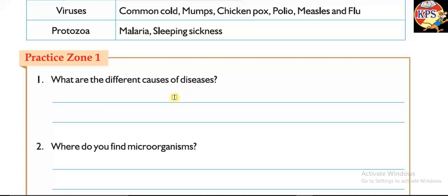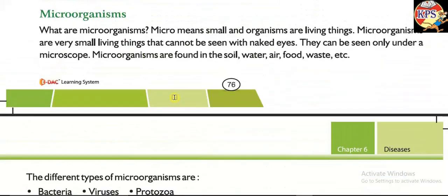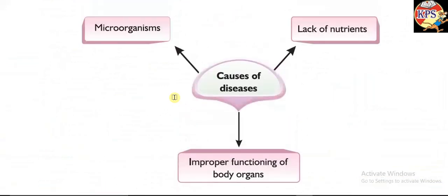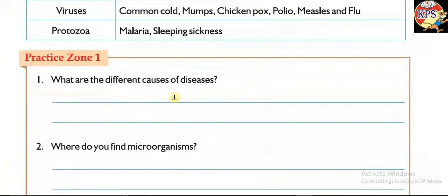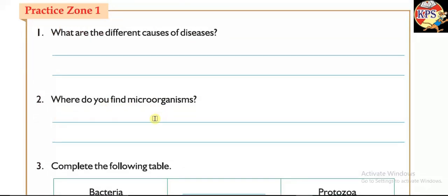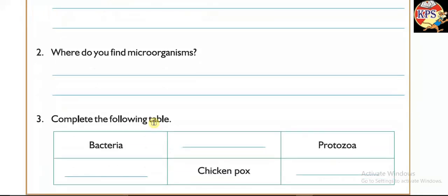A few questions are given here. What are the different causes of diseases? The answer is: first, microorganisms; second, improper functioning of body organs; and third, lack of nutrients in our body. Where do you find microorganisms? We can find microorganisms in water, soil, waste, and many other places.